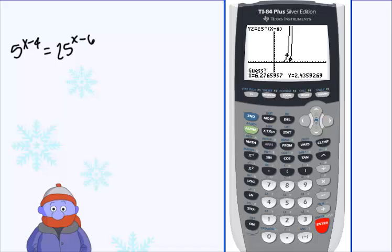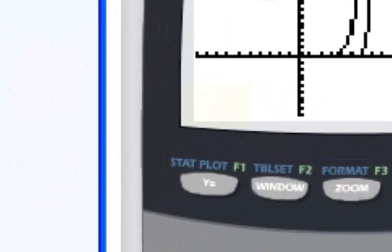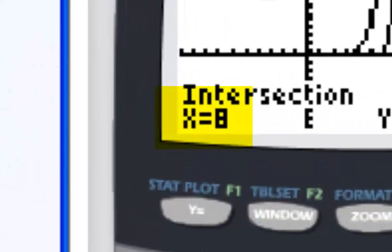And the 84 will always ask you to guess. So will the 83. Just go ahead and click through that with one enter. But don't hit it too quick. Enter for that third guy. And there's our point of intersection.